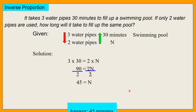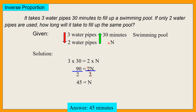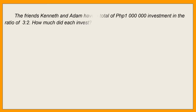So ibig sabihin, it takes 45 minutes para mapuno ang swimming pool kung dalawang water pipes na lang ang gagamitin. So mas tatagal na ang pagpuno ng swimming pool.